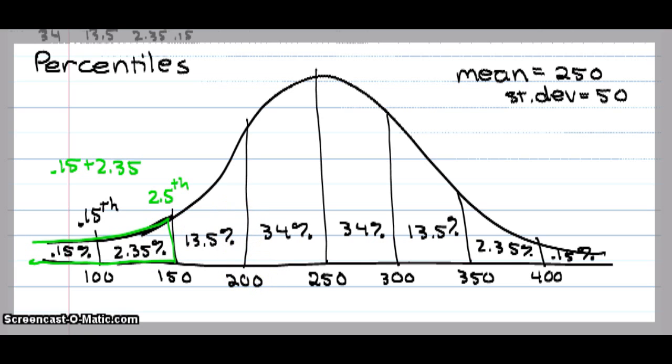200, I have to add all the area to the left of 200. Well I already know this is 2.5% at the 150. So I take 2.5% plus 13.5%. And this is the 16th percentile.